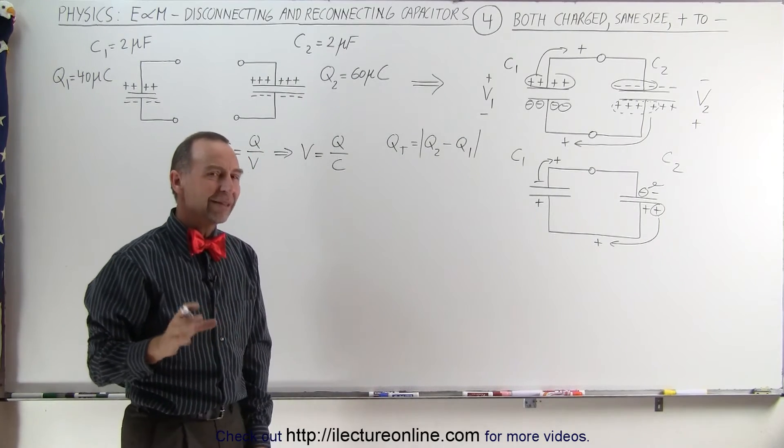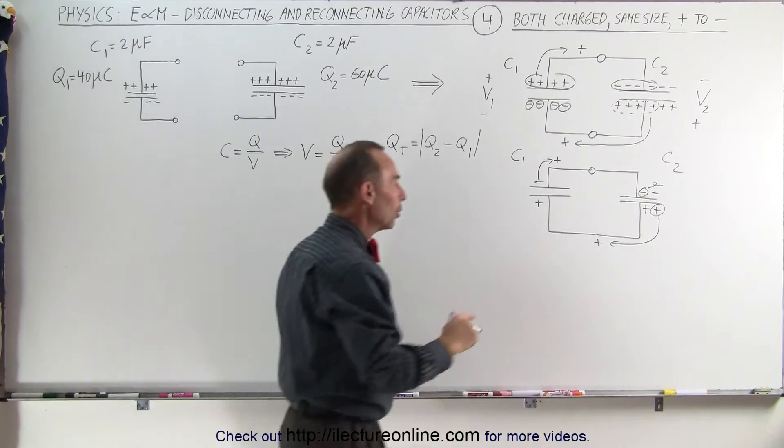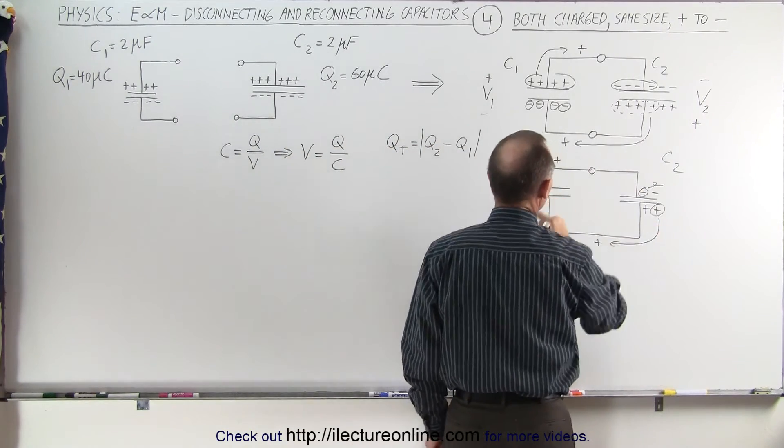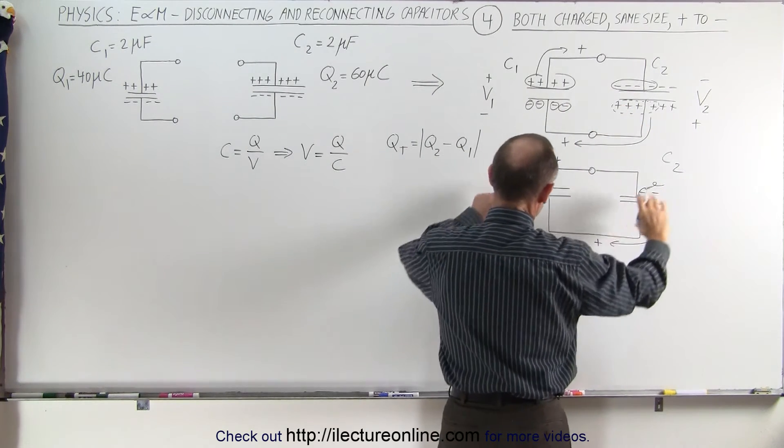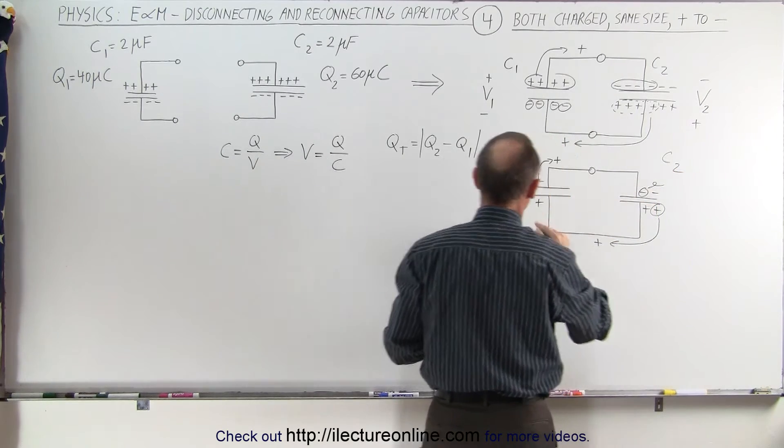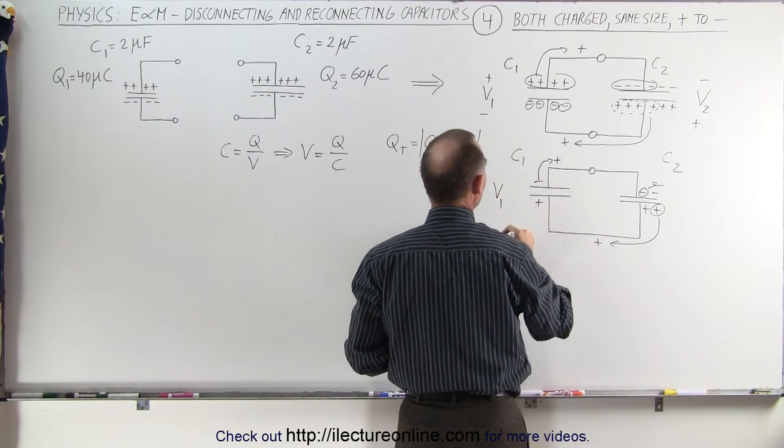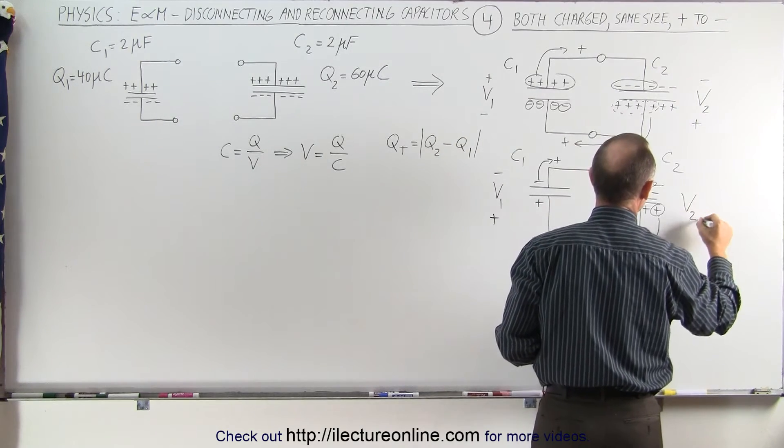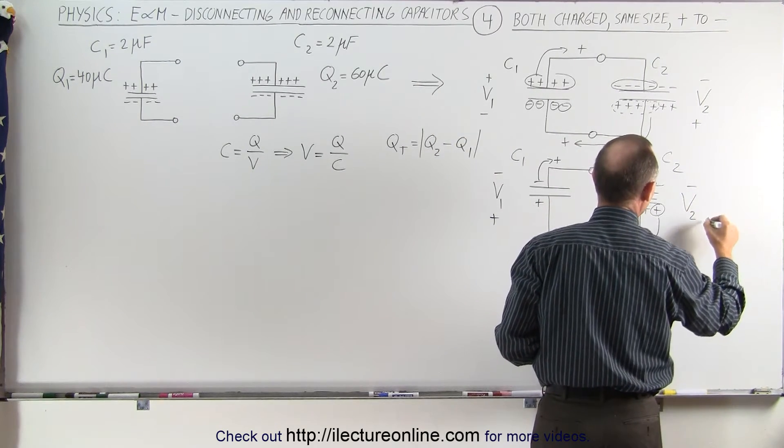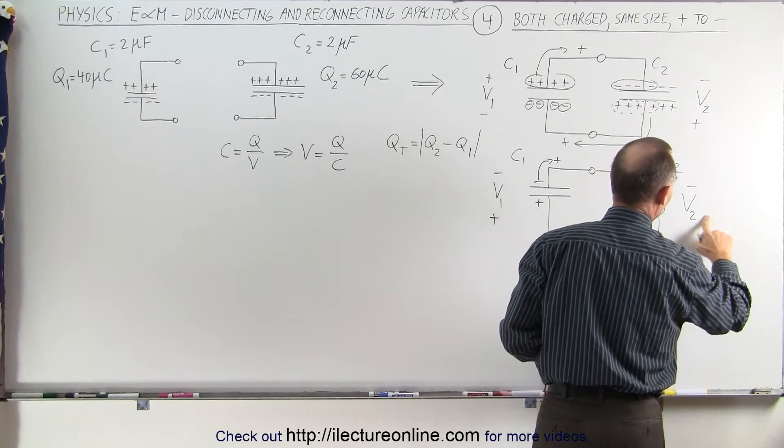The rest is going to be the same as before. We can go around the circuit and realize that when everything is said and done, here we have V1 with a negative end and a positive end. Here we have V2 with a negative end and a positive end.